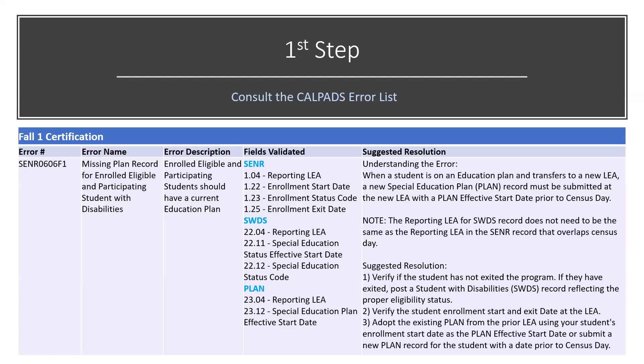That's key because we have an F1 error. If you go back to the error number, at the very end is F1, which tells you it's Fall One. All Fall One errors are relevant as of census day. There's also a note: the reporting LEA's student with disability status record does not need to be the same as the reporting LEA, so the status record can pre-exist your enrollment — you do not need to submit one.